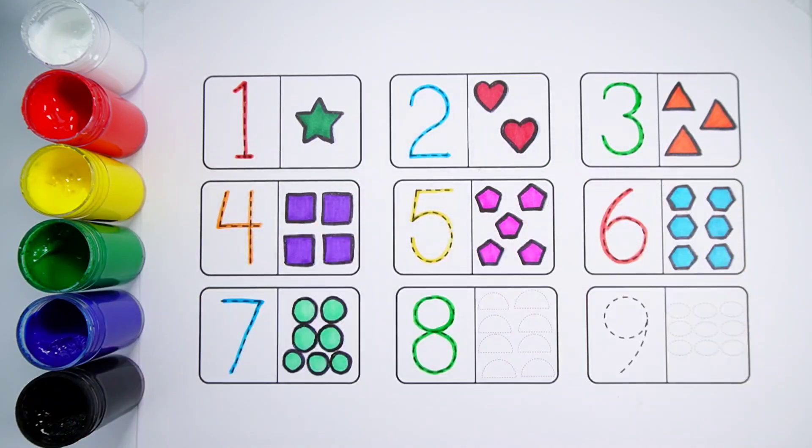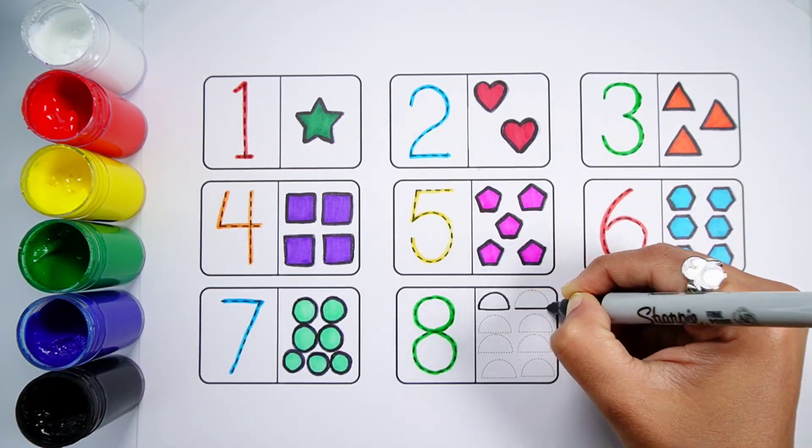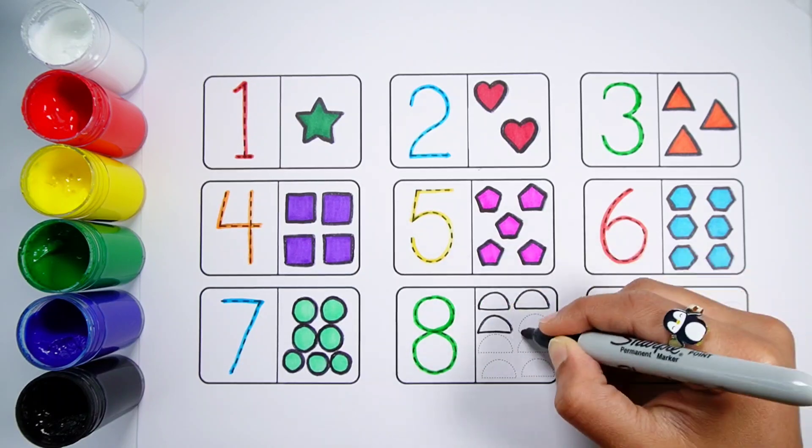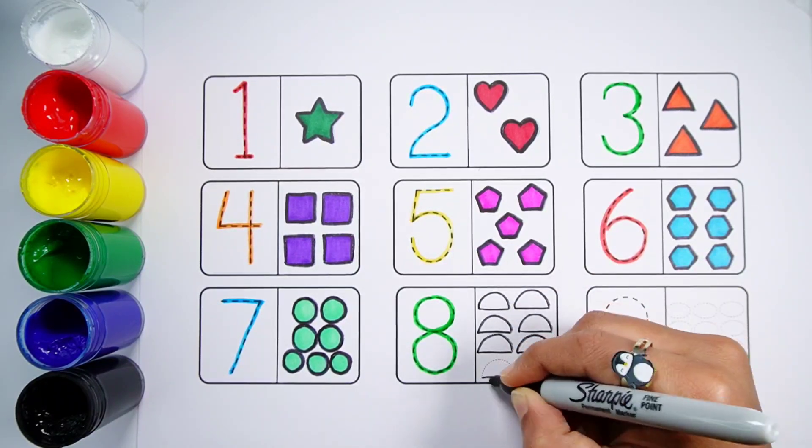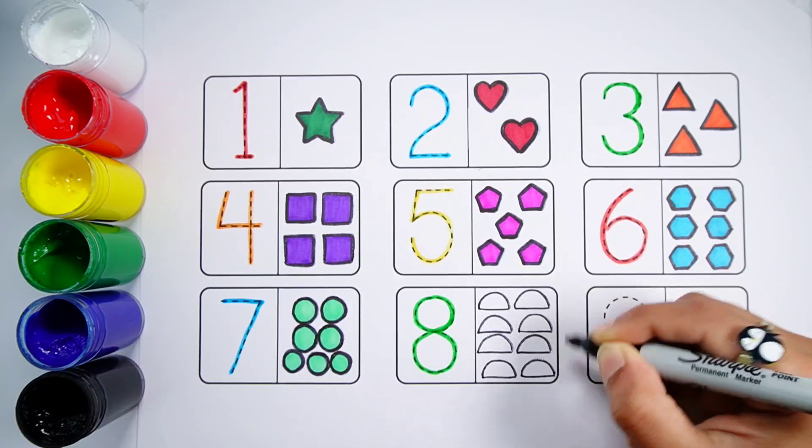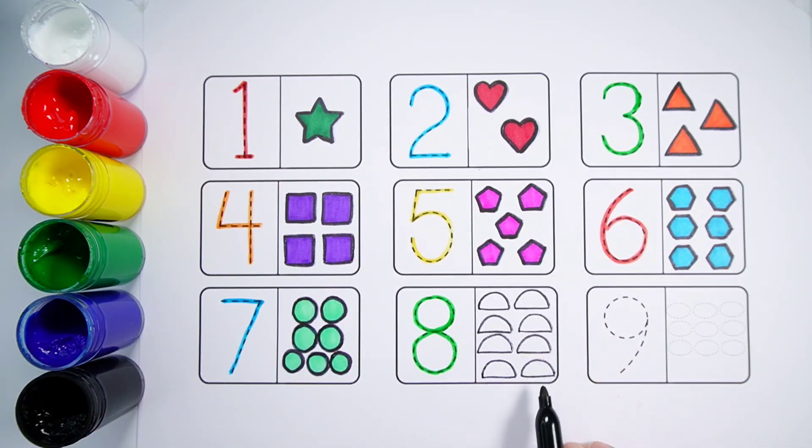Number 8. One, Two, Three, Four, Five, Six, Seven, Eight. Eight Semi Circles.